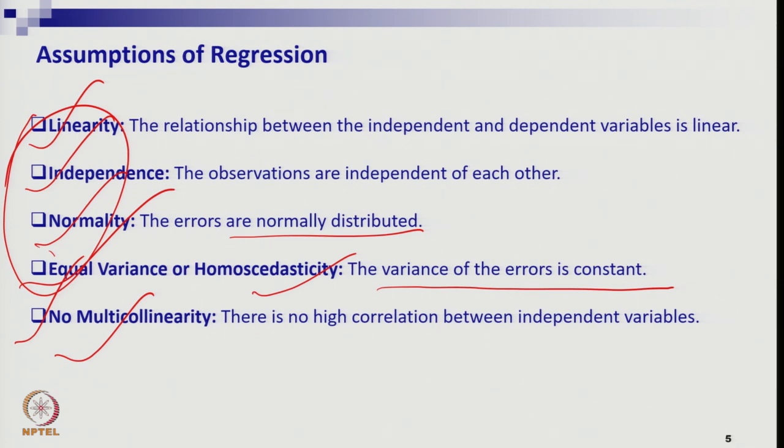If there is little multicollinearity or some correlation between independent variables we can accept it and fit the multiple regression line, but if there is high correlation between independent variables you cannot accept that relationship — you have to reduce the multicollinearity. We will take a separate session to discuss multicollinearity. These are the major five assumptions for multiple linear regression.